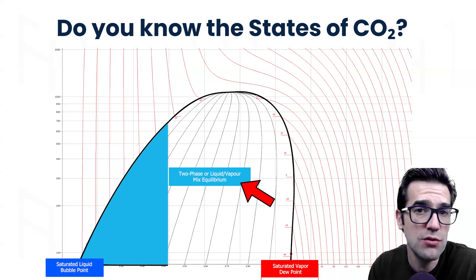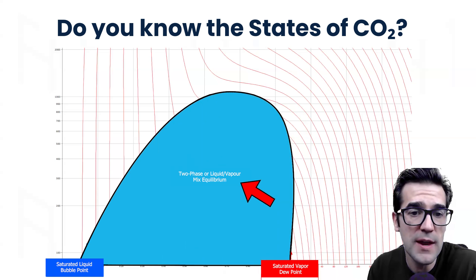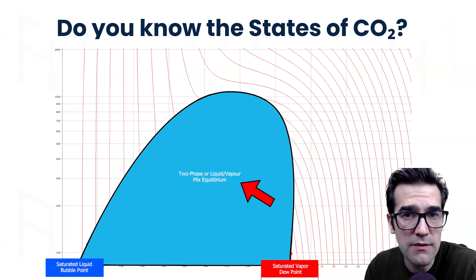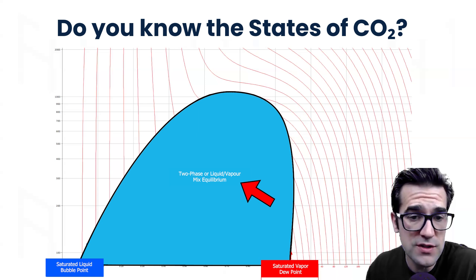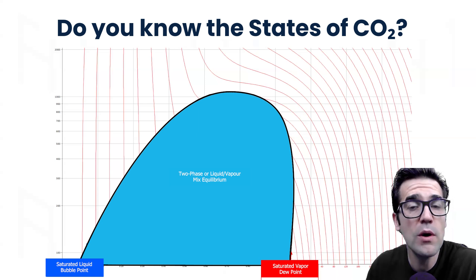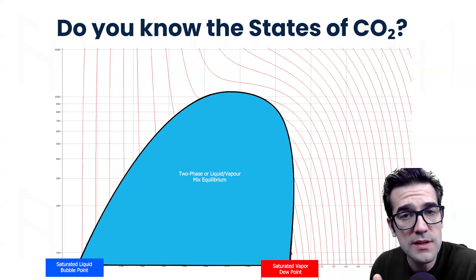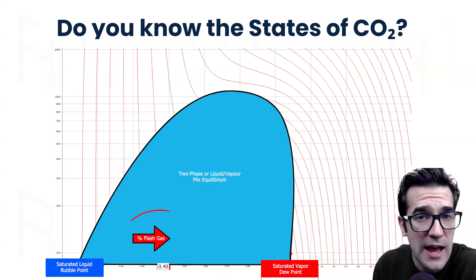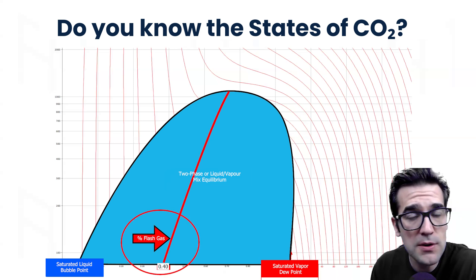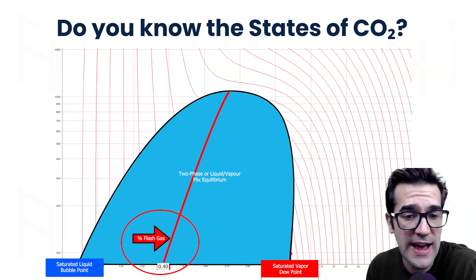Inside here is the two-phase mixture or liquid and vapor mixture. This is the equilibrium of CO2 or any refrigerant that's inside the bell curve. But what you want to understand is depending on where you're at, how much gas to liquid percentage is there. I call this flash gas percent.